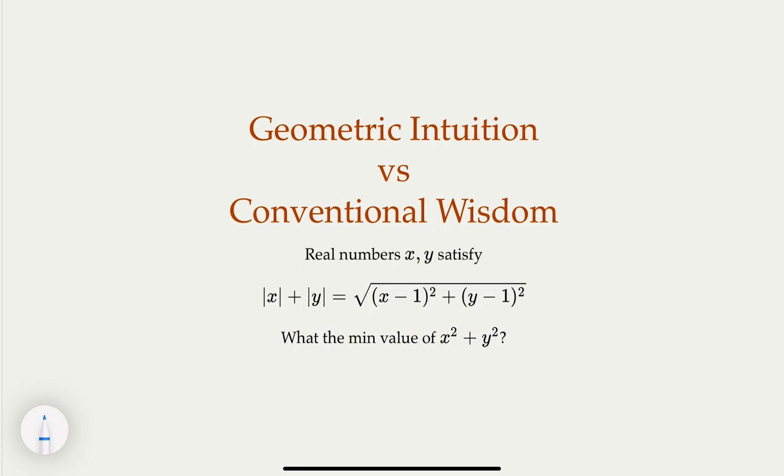This is an algebra or maybe calculus problem. What we are given is that x, y is a real number, with this condition satisfied: the absolute value of x plus y is equal to the square root of (x minus 1) squared plus (y minus 1) squared. And we try to find the minimum value of x squared plus y squared. How would you do it?